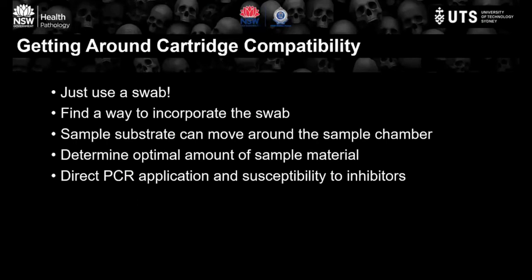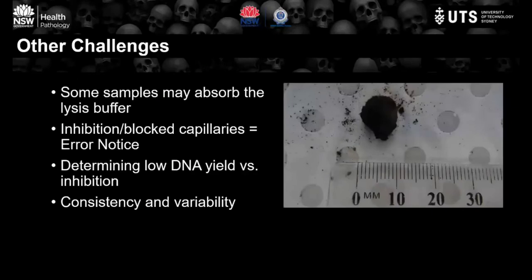Direct PCR action may mean we're more susceptible to inhibitors with these sample types. Bone contains inhibitors, and we have additional inhibitors from decomposition by-products or soil — we may need to balance this with a quick clean-up. In the case of bone shavings, they appear to absorb the lysis buffer, ultimately leading to failed analysis, further complicated when too much bone is used. In the case of dirty samples causing inhibition or clogged capillaries, a warning notice will appear, but it can be as simple as running a blank in between. In the event of a failed analysis, it can be difficult to distinguish between no or low DNA versus inhibition, and these would guide further testing.